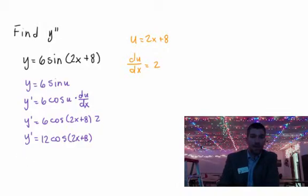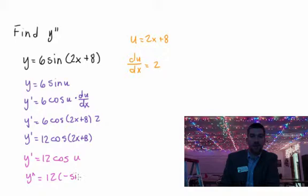What does that mean? That means that for the rest of this problem now, I'm going to work with y prime equals 12 cosine u. So take derivative, that's going to be y double prime now equals 12 times negative sine u times du dx.